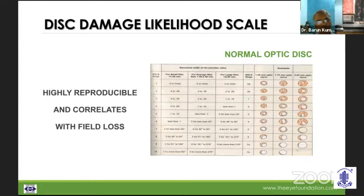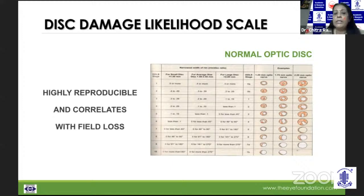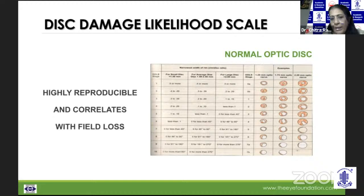The disc damage likelihood scale becomes very significant because it is highly reproducible and correlates with field loss. It classifies discs as small (less than 1.5), average (1.5 to 2), and large (more than 2). Looking at the disc and rim ratio, as the rim area ratio becomes lesser, you get conscious that you're looking at glaucoma, and it further tells you in which clock hour the thinning, notch, or rim loss is occurring.